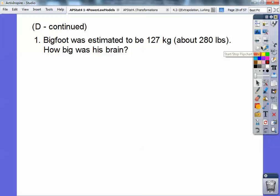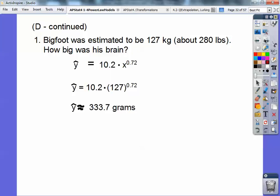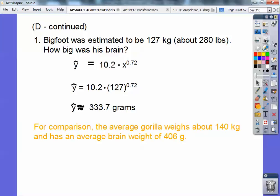So Bigfoot was estimated to be 127 kilograms, which is about 280 pounds, how big was his brain? Some kids said, is his brain, because they think that he's still alive. So we get that equation right there, we're going to plug in, that's the equation right there, we're going to plug in 127 for x, x stood for the weight right there. So there we go, and we get his brain to be about 333.7 grams. Yeehaw! Alright, so for comparisons, the average gorilla weighs about 140 kilograms and has an average brain weight of about 406 grams.